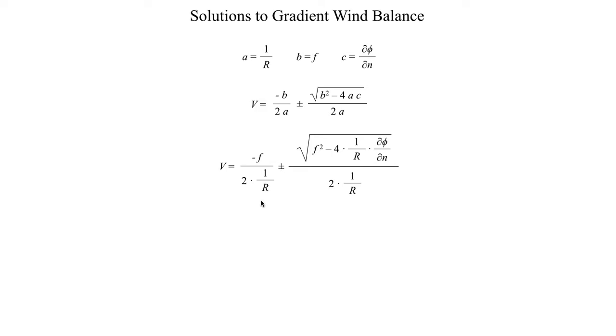One thing we can do is we can take this 1/R and bring this term up into the numerator to get a cleaner fraction, and we can do the same thing to this numerator right here. So here we get that V is equal to minus fR/2 plus or minus R/2 times the square root of f² minus 4/R times dφ/dn.